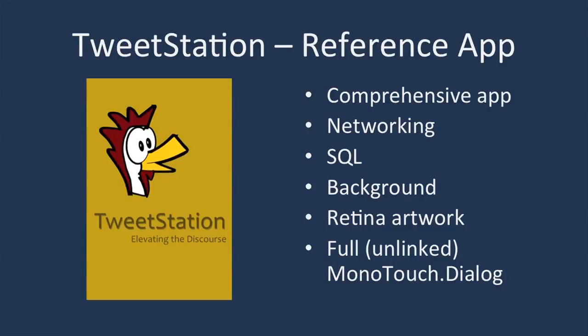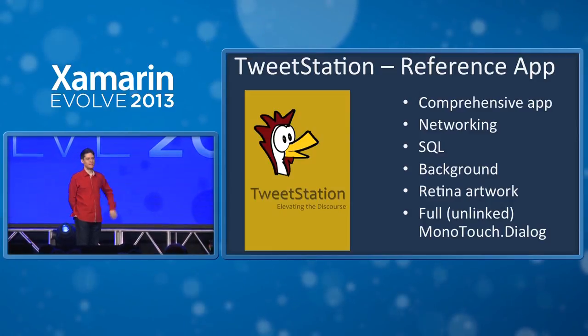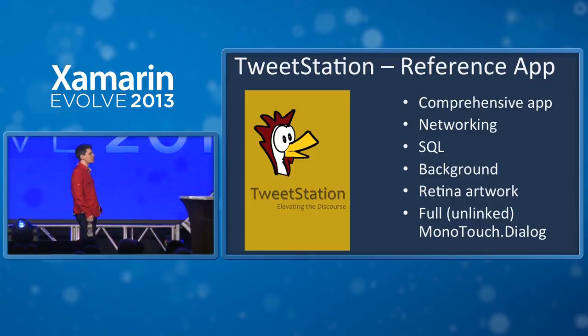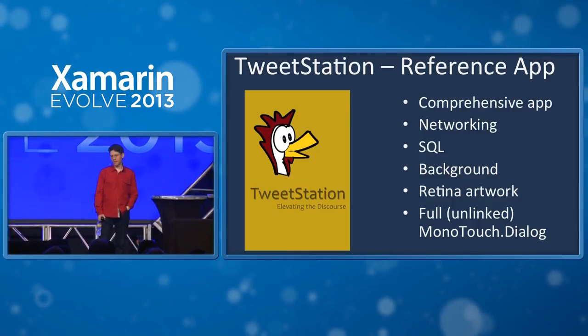We've been working to make your applications smaller and smaller. For the samples I'm going to show, I'll use TweetStation, a reference app we've used to check these things. It's been around a very long time and the source code hasn't really changed in two years — mostly because I haven't had time to work on a Twitter client. TweetStation is the only Twitter client that elevates the discourse. It does that by introducing chicken noises and a mischievous soundtrack for when you're writing a tweet — whenever you're tempted to insult somebody on Twitter, some mischievous music plays.